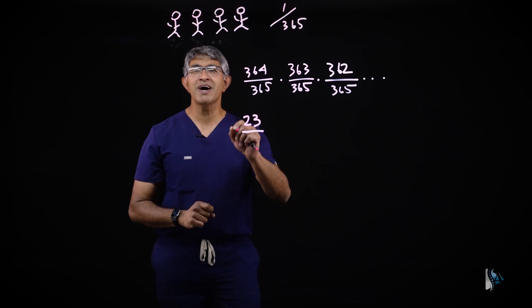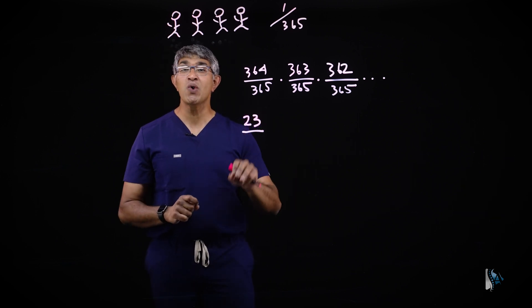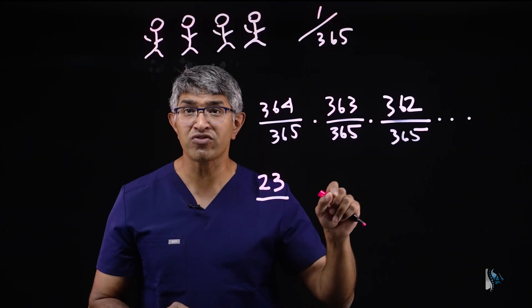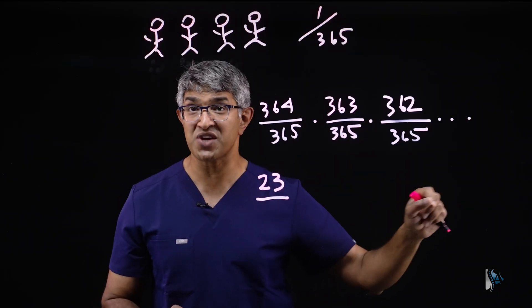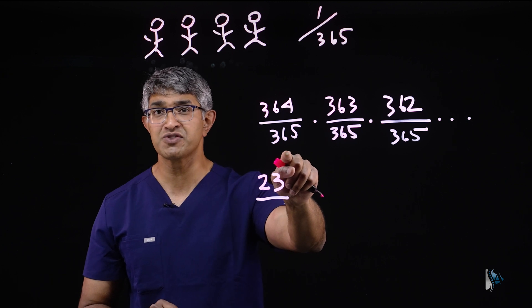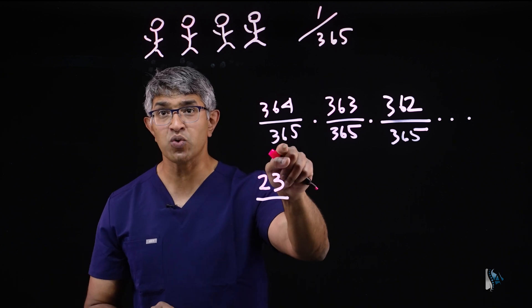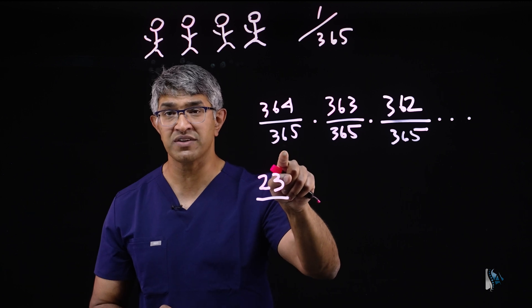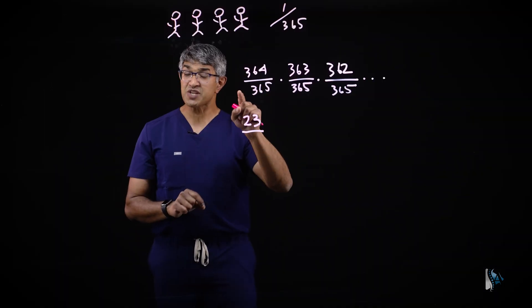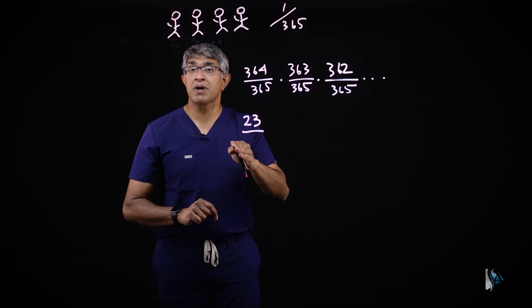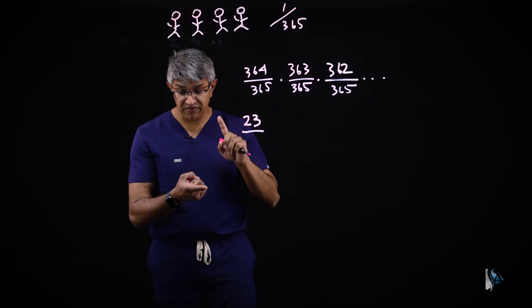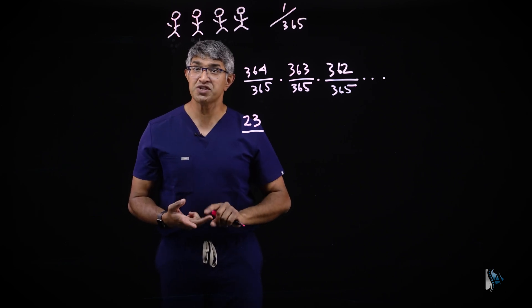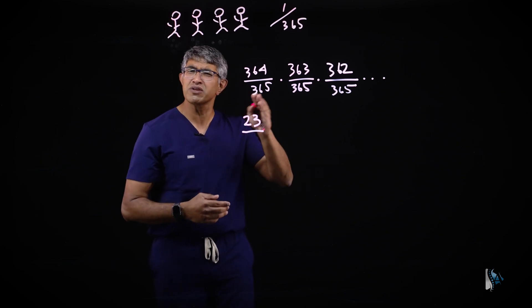So if you imagine you're an incredible surgeon and you have the ability of achieving perfection, whatever that means, with every given maneuver of 99.7%, in other words, 364 over 365. If that's how good you are, the likelihood that you're going to mark them perfectly is 99.7%. And then the next maneuver is the same thing. The probability of doing a perfect job with the next step of exposure or the next step of instrumentation or the next step of decompression, every one of those things, you're an incredible surgeon.